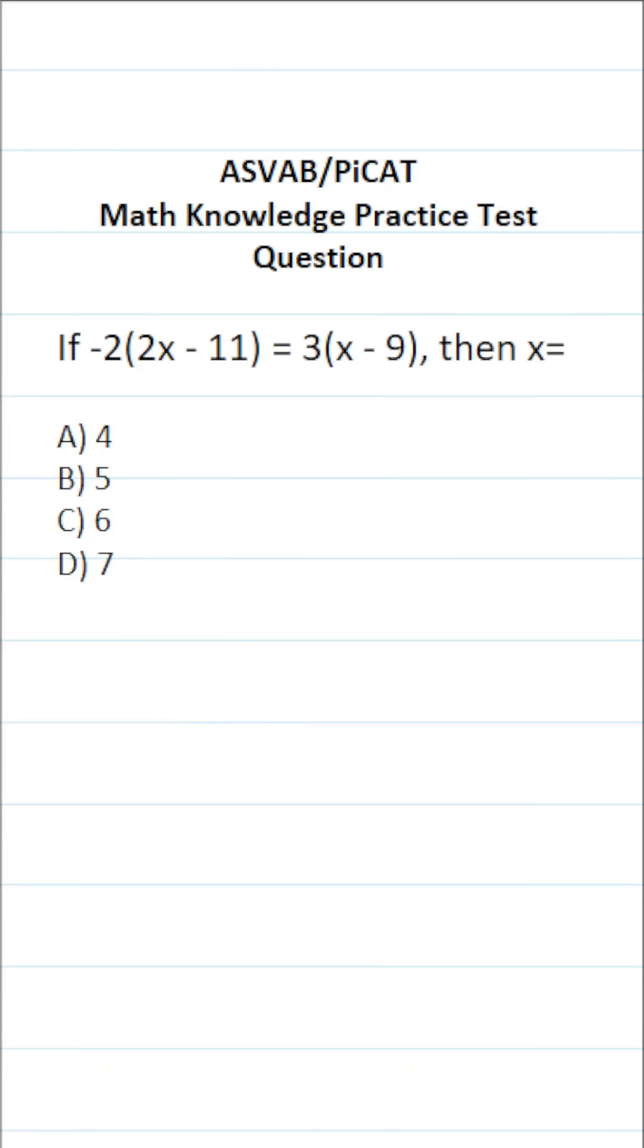This math knowledge practice test question for the ASVAB and PiCAT says if negative 2 times 2x minus 11 equals 3 times x minus 9, then x equals.